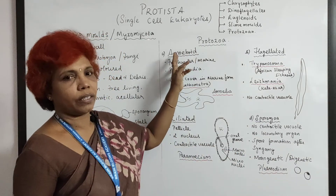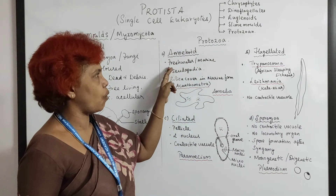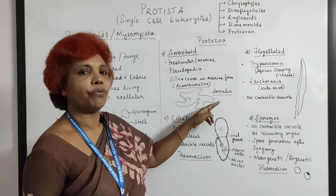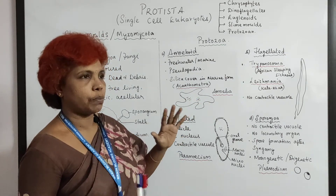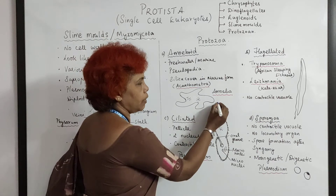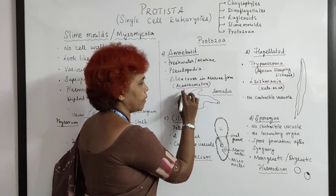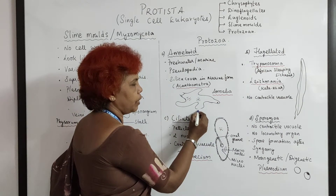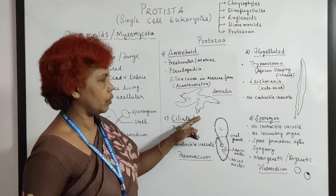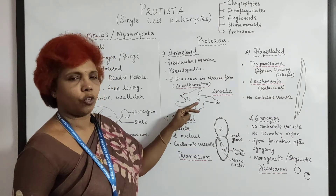Amoeboid protozoans use pseudopodia — pseudo means false, podium means locomotory organ — so they are false-footed animals with no fixed shape. If food is detected in one direction, the cell extends toward it, and the cytoplasm streams accordingly. Their cytoplasm is divided into ectoplasm and endoplasm, similar to what we saw in Euglena.